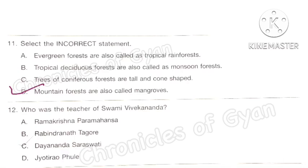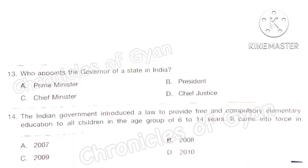Question 12: Who was the teacher of Swami Vivekananda? The correct answer is option A: Ramakrishna Paramahansa. Question 13: Who appoints the governor of a state in India? The correct answer is option B: the President.